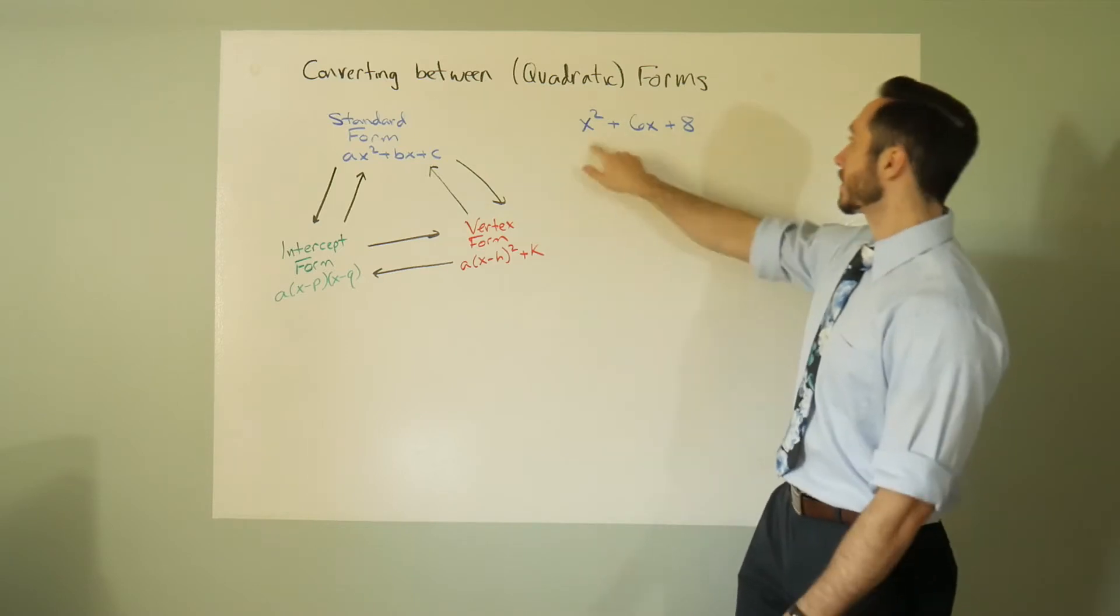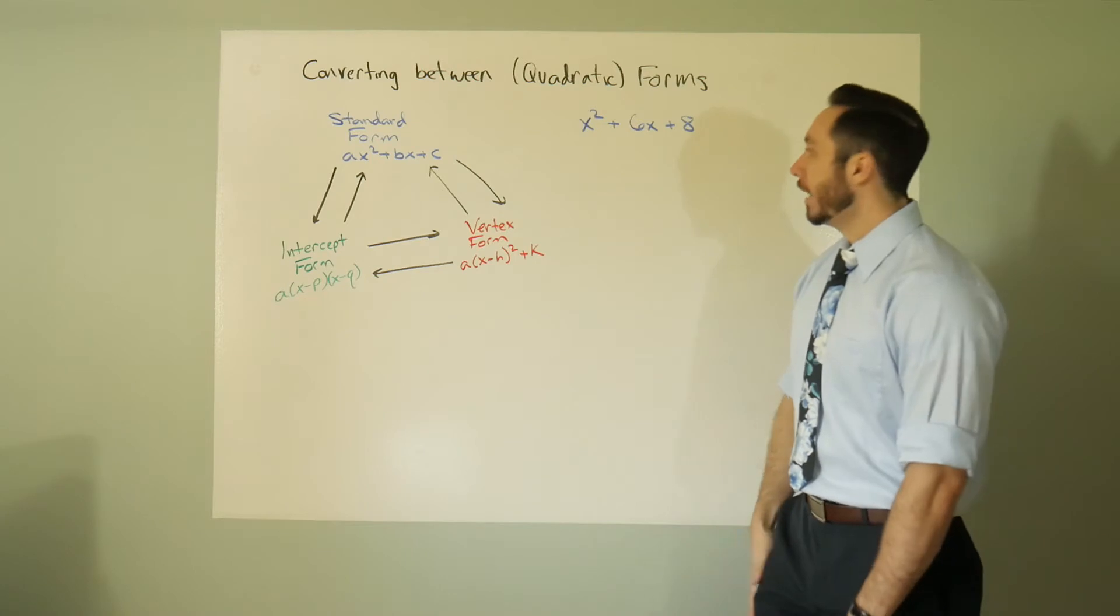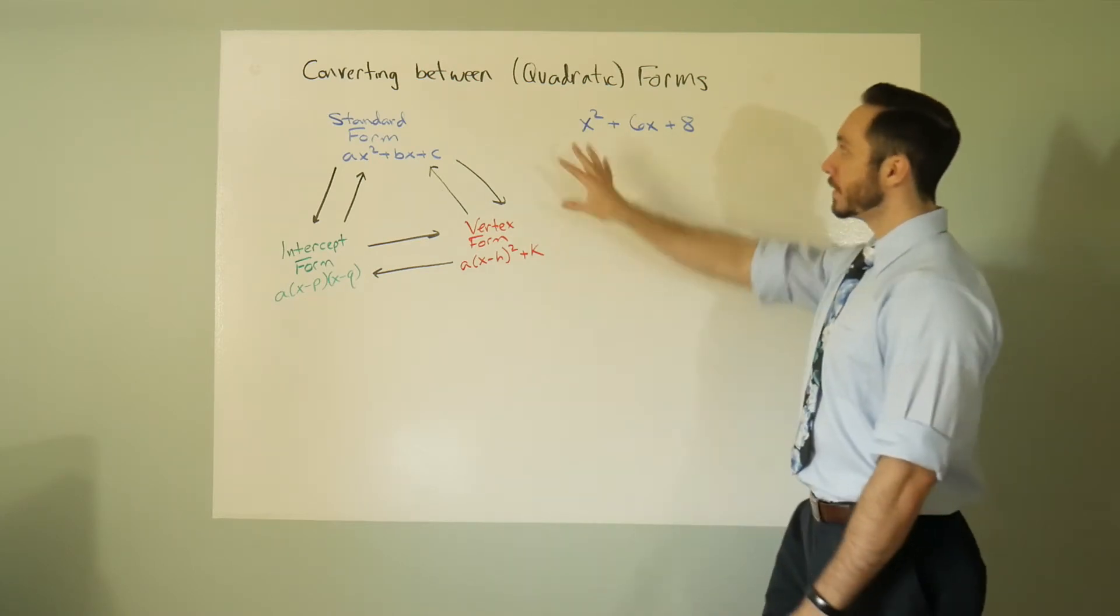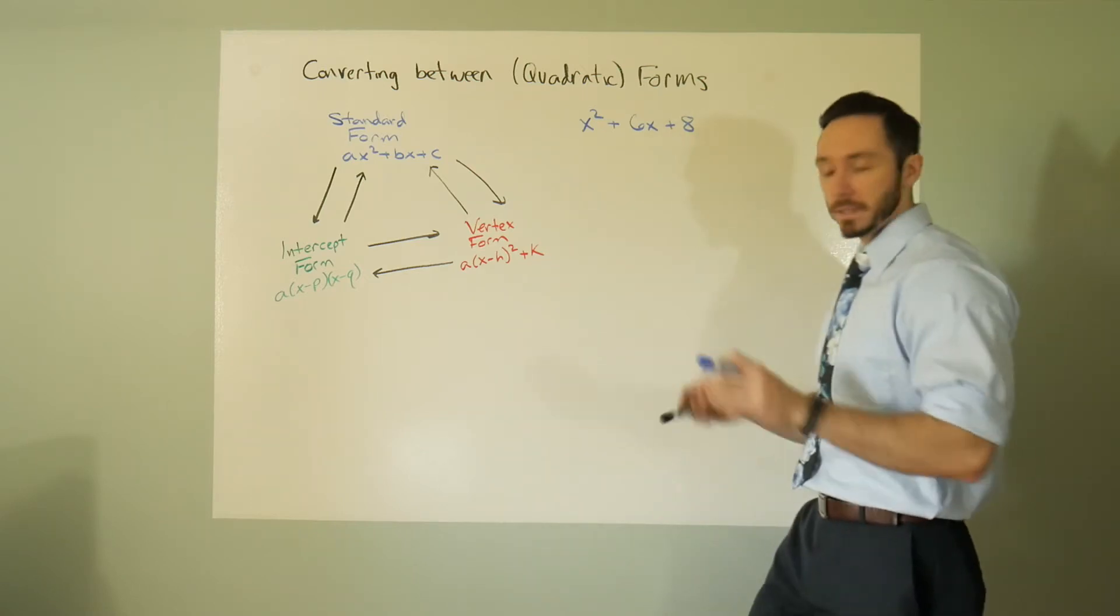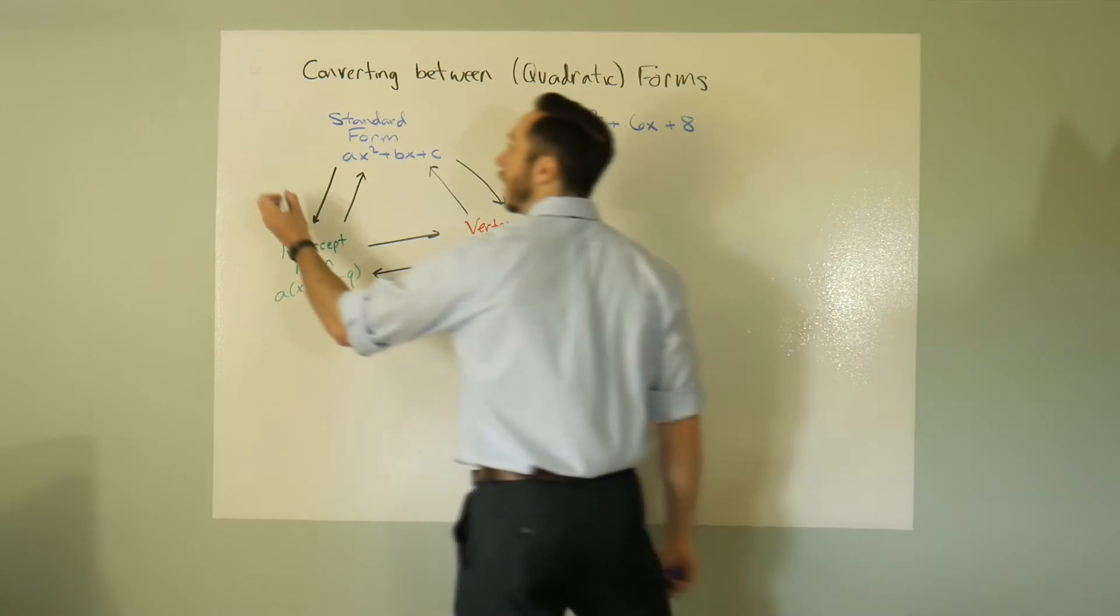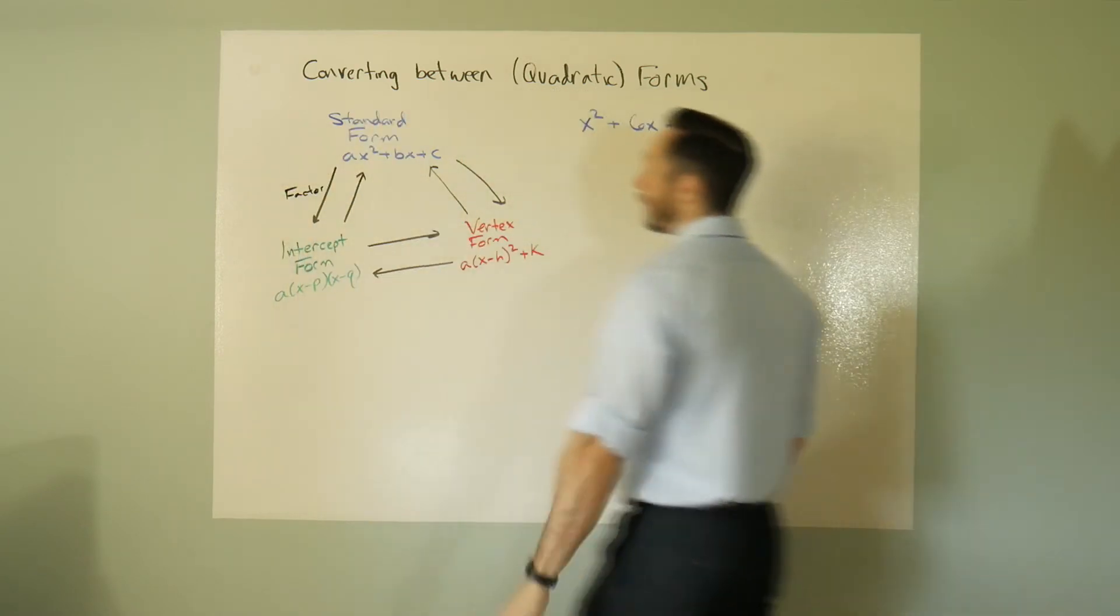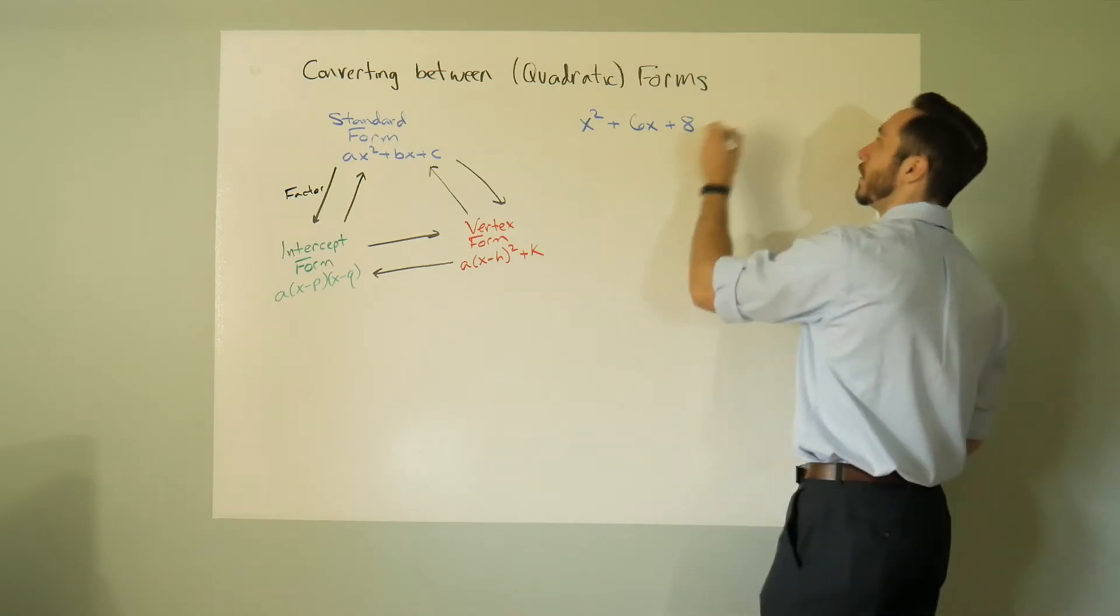Let's take a look at the standard form quadratic x squared plus 6x plus 8. I want to get it into intercept form, that's my goal. So the way I would do something like this is I would factor. If I want to go from standard to intercept form, you factor.